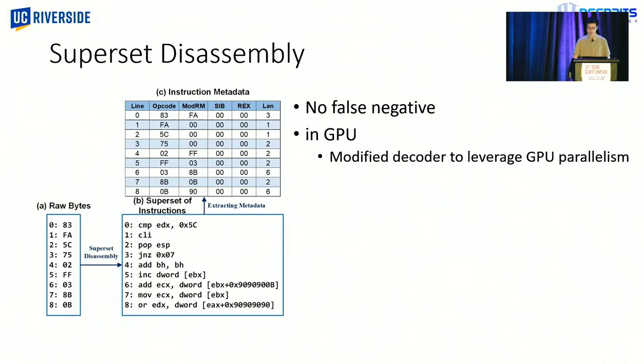So, the first is superset disassembly, and superset disassembly is a kind of disassembly approach where you disassemble starting from every single byte. So, as an example in this figure, there are nine bytes. By disassembling from each of them, we obtain nine possible instructions. And superset disassembly comes with a nice feature, which is there's no false negative. We also modify the x86 decoder so that it runs in GPU to fully utilize the GPU parallelism. And besides that, we also convert the instructions to a fixed-length vector, and we call it metadata, which keeps the key features, such as opcode and registers, and leaves out not so relevant features, such as displacement.